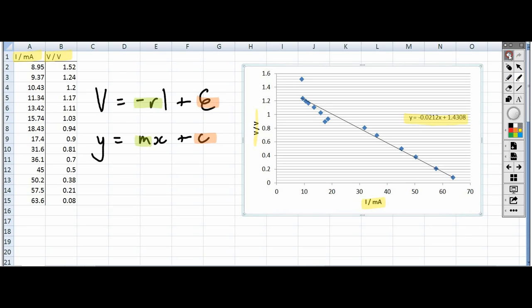What we're saying is that minus 0.0212 is minus R, so R is 0.0212, and we're saying that the Y intercept plus 1.43 is the EMF. Not bad compared to our results that we measured there.